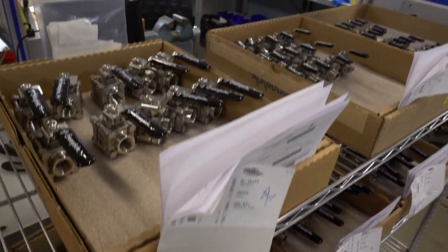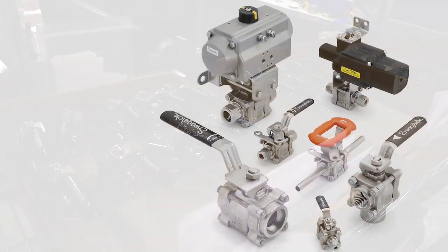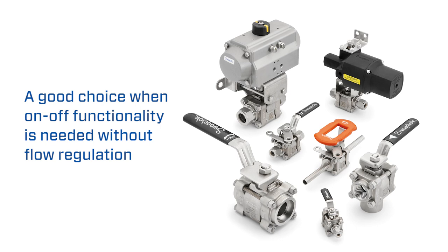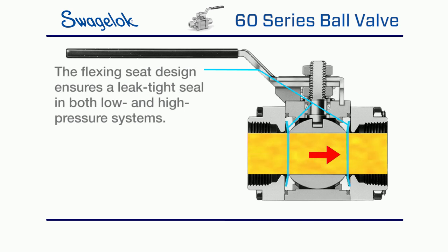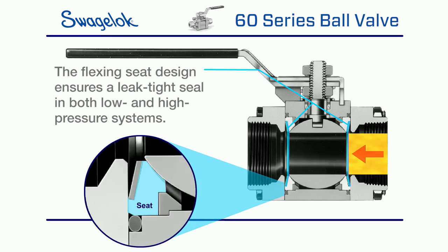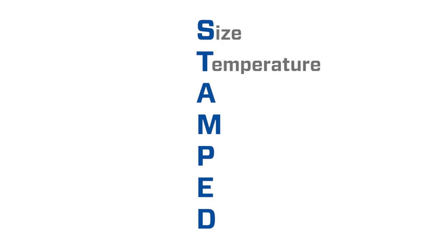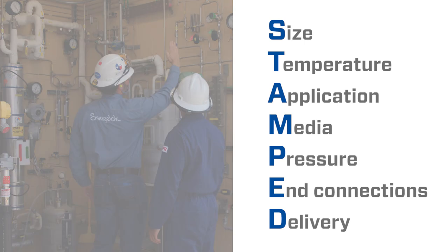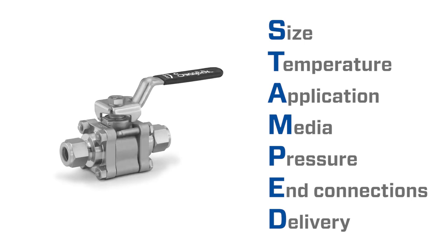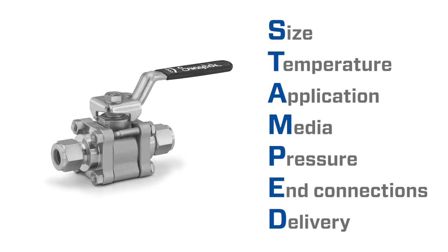A two-way ball valve such as the Swagelok 60 series ball valve can be a good choice for applications needing on-off functionality without flow regulation. The flexing seat design ensures a leak-tight seal in both low and high pressure systems. Following the STAMPED method — which accounts for size, temperature, application, media, pressure, and connections and delivery — can help you make the best choice for your system. Here's how to apply this approach to selecting a Swagelok 60 series ball valve.